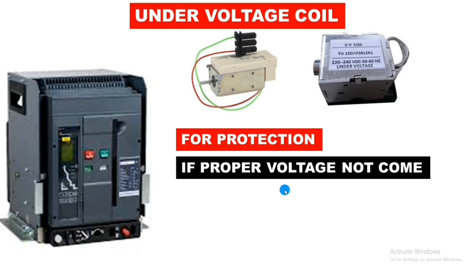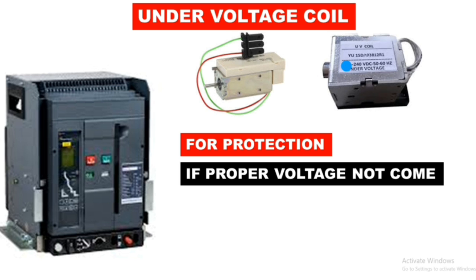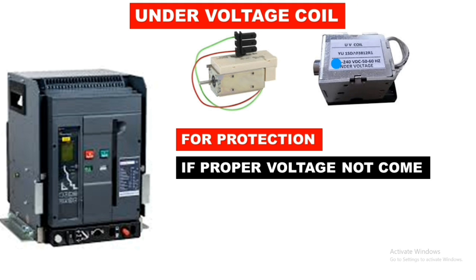The under voltage coil's main function is to trip the breaker if proper voltage is not coming. The under voltage coil should be connected at 440 volt so that if any phase is missing, this under voltage coil trips the air circuit breaker and the load will be safe. The main function of the UV coil is providing protection to our load.